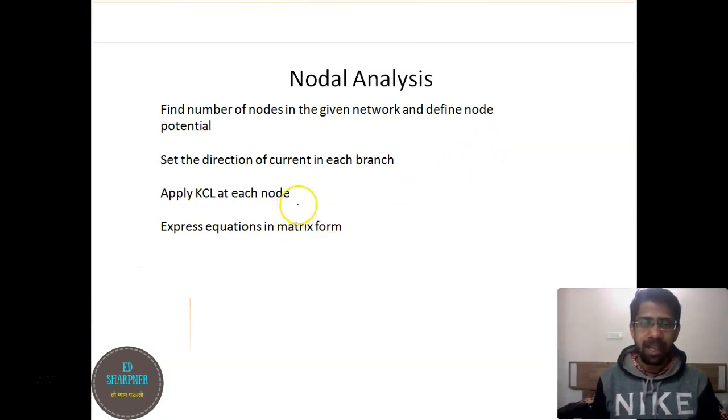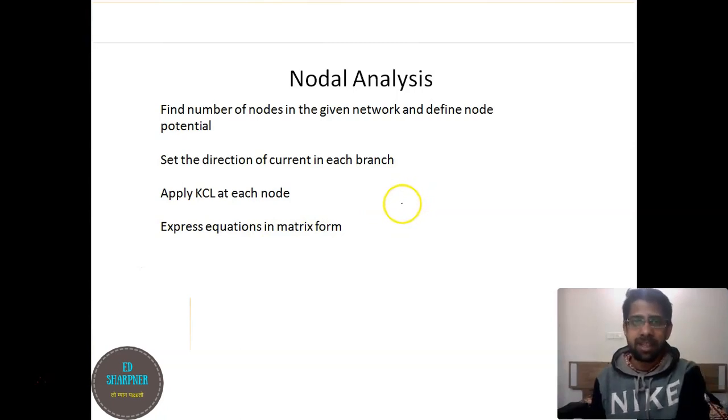Then we have to apply KCL at each node. That means equating currents or adding all the currents coming at the node to be zero. Now we have to express these equations in matrix form. Let us see how we can express these equations in matrix form easily.